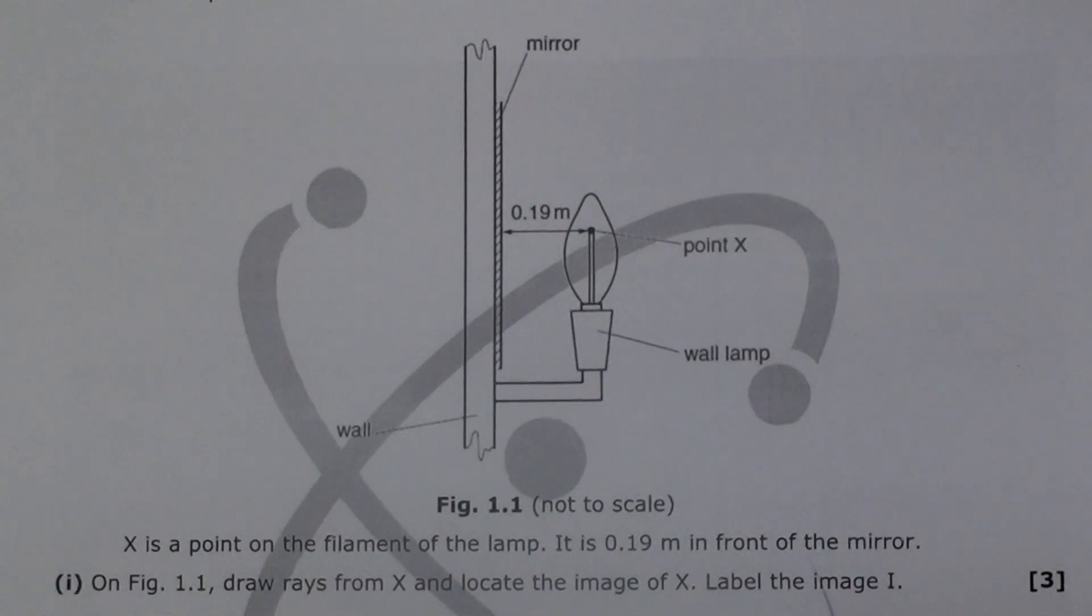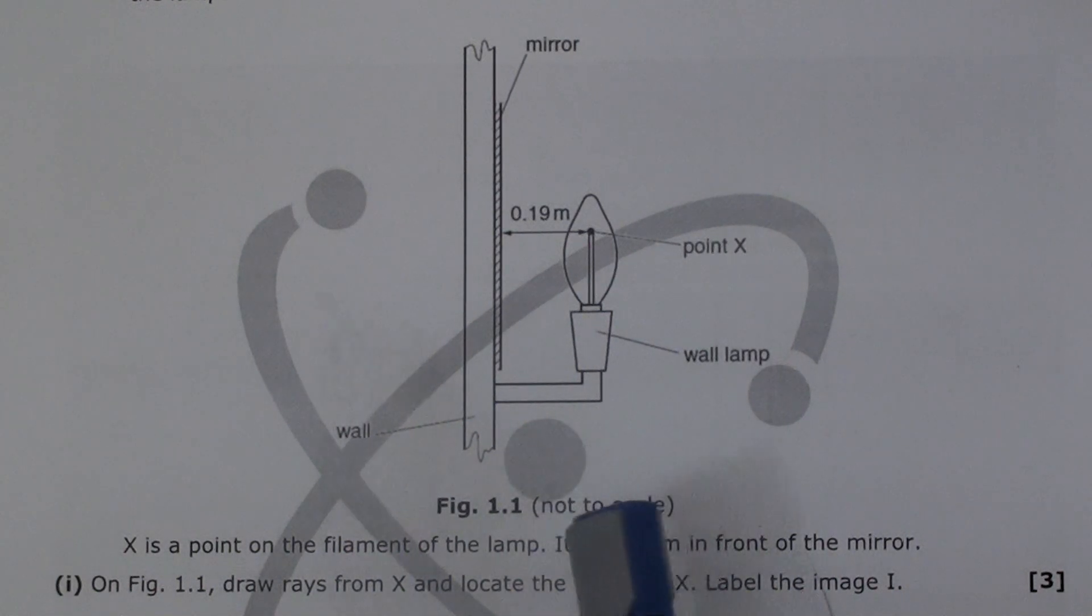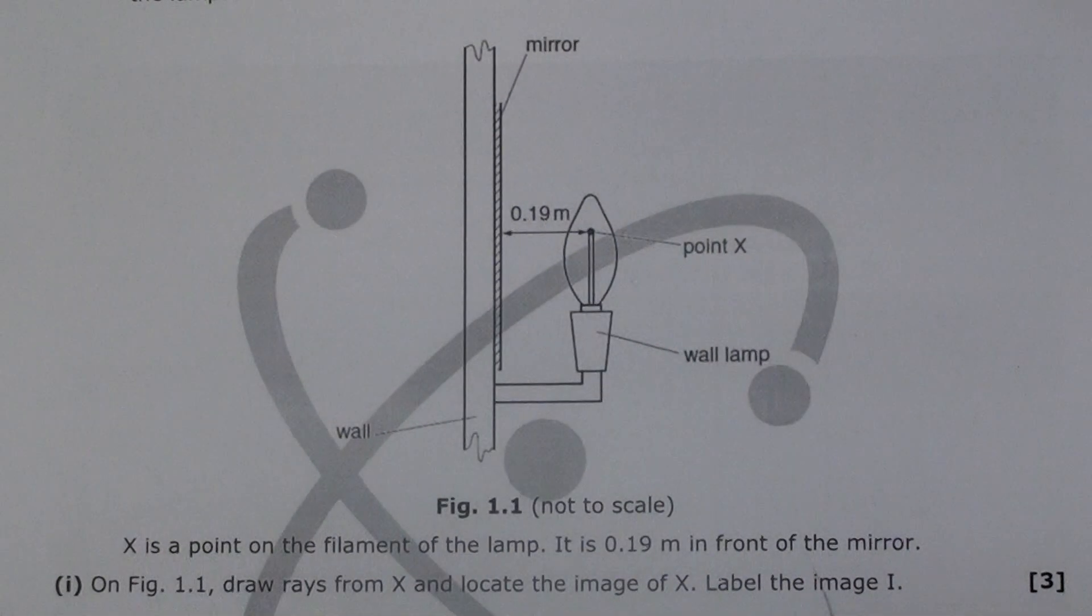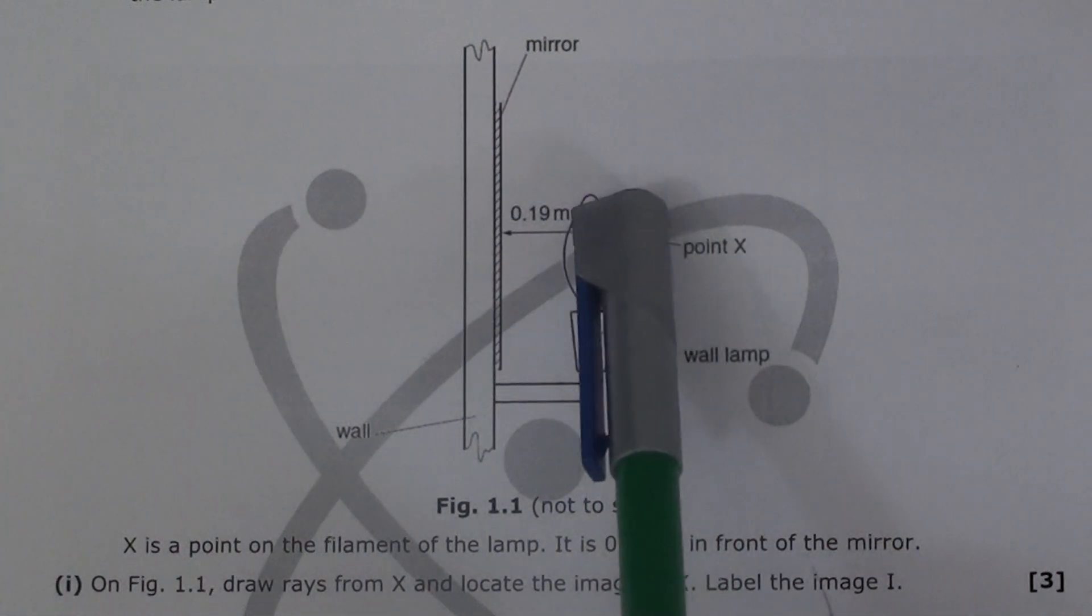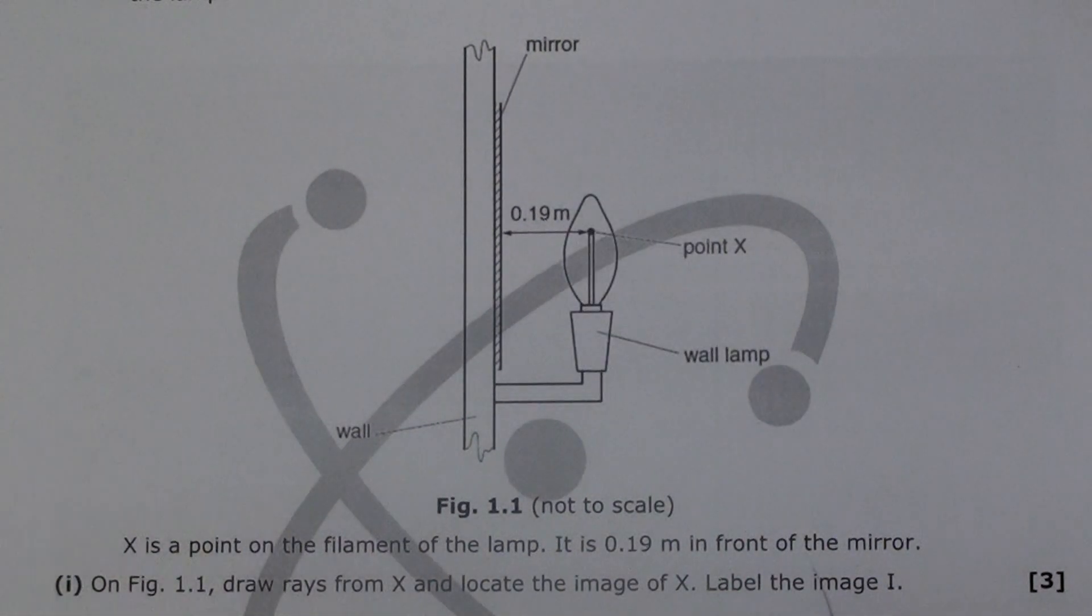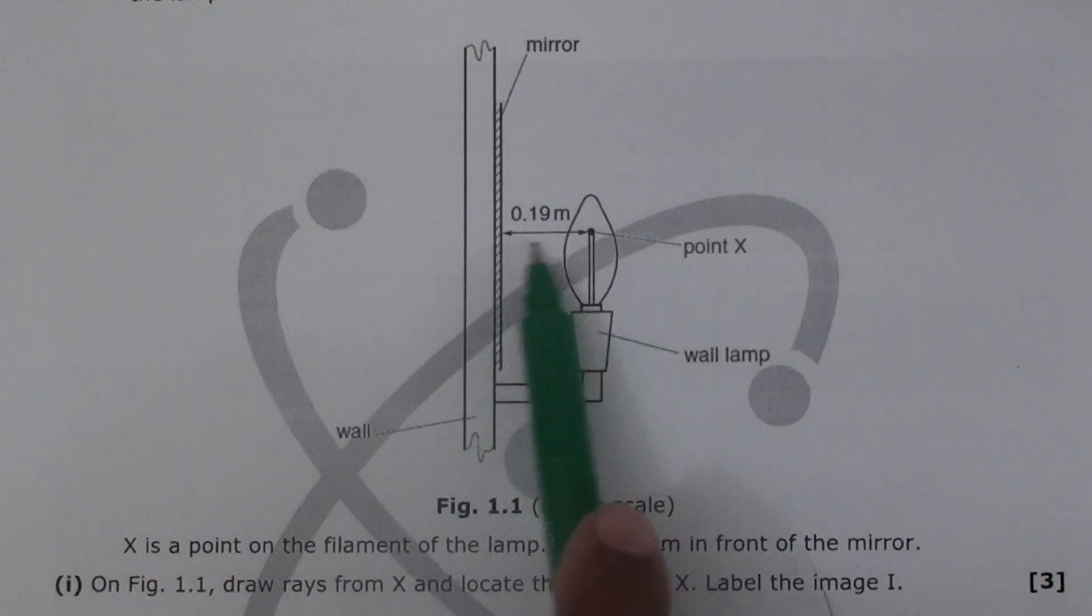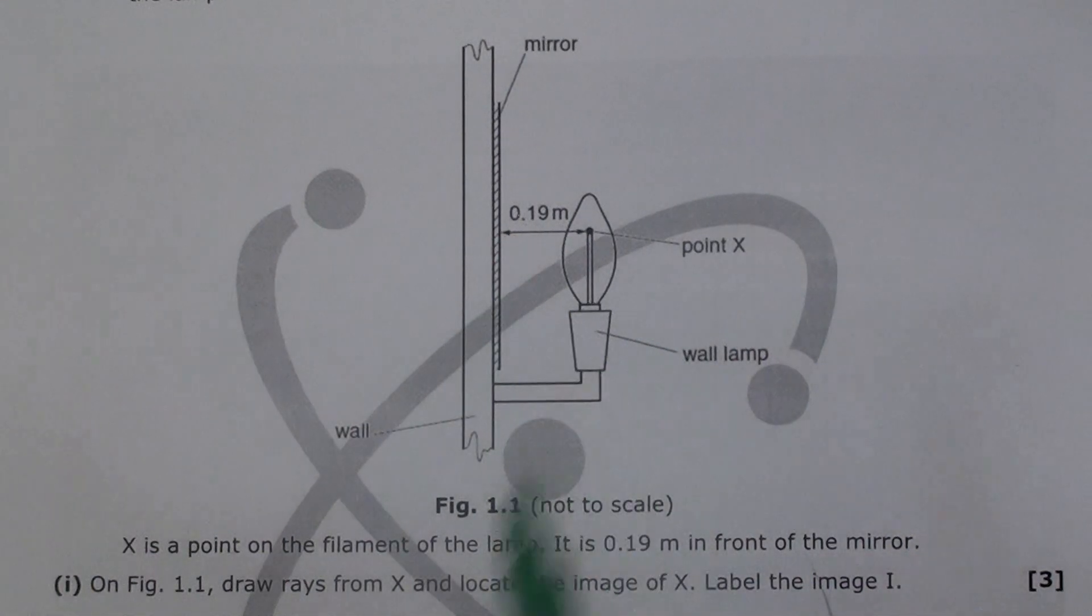Now the question is - by the way, this diagram is not to scale, so remember it's 0.19 meter, but the actual distance on paper is not 0.19 meter. X is a point on the filament of the lamp, it is 0.19 meter in front of the mirror. This is point X, and this is 0.19 meter away from the mirror. This is the mirror, by the way.